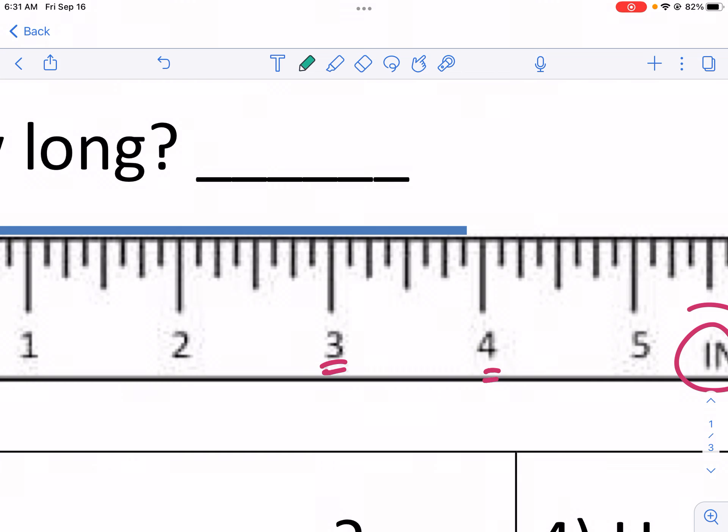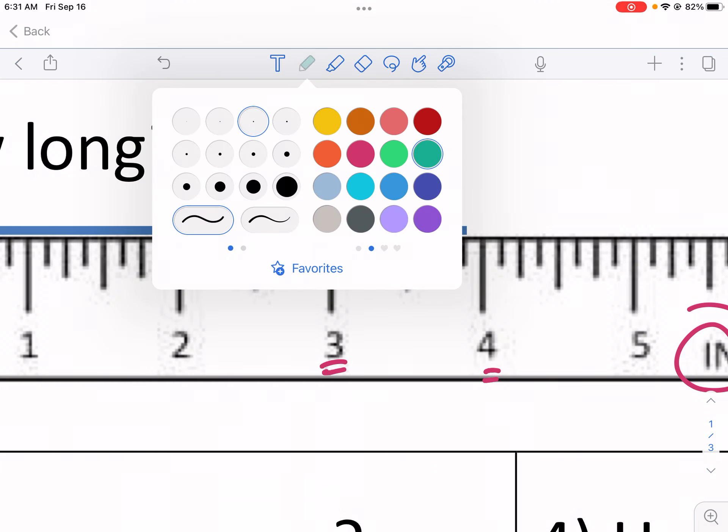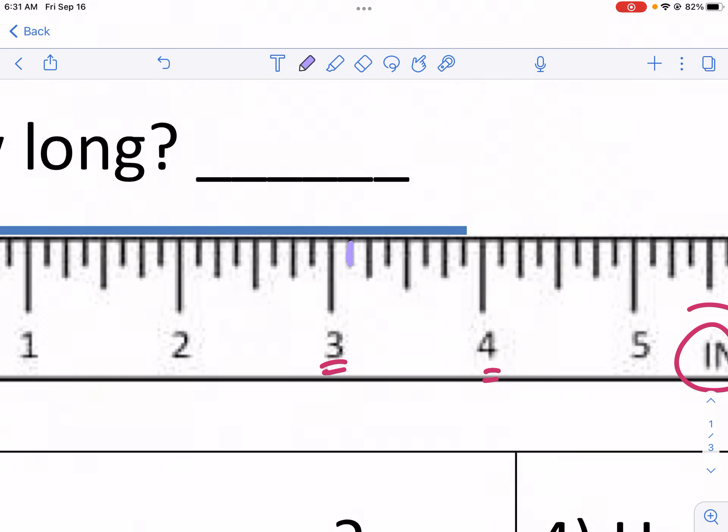Now the smallest units, we didn't even cover the smallest ones. Now let's use a different color. Let's use purple. We have these little lines, how many lines in between three to four. So we have one, two, three, four, five, six, seven, eight. That means there's eight little parts here. And that would make each one of these lines an eighth. So that would be three and one eighth.